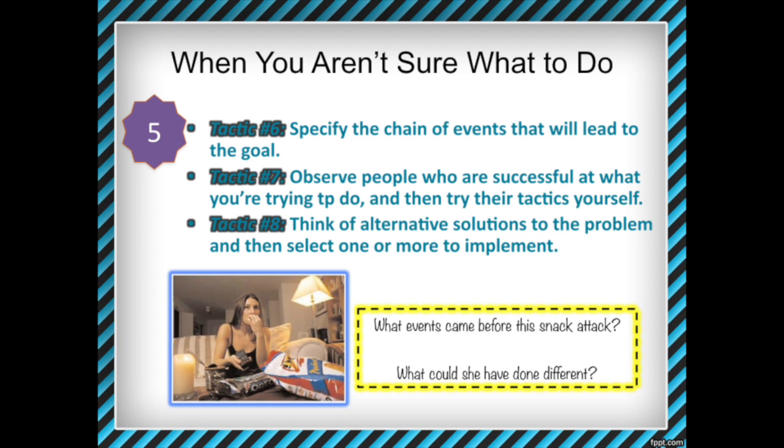If it's difficult to think of sub-goals that will get you towards your ultimate goal, one thing you can do is tactic six: specify the chain of events that will lead to your goal by working backwards. For lecture activity number five, look back at what you wrote for lecture activity one — the list of concrete examples of recent times when you've done your bad behavior.